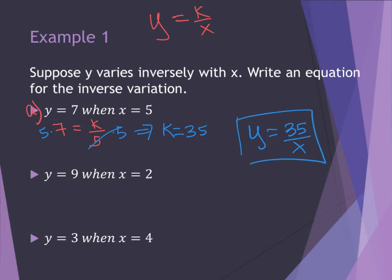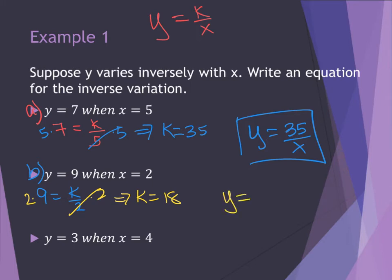For part B, I have 9 for my y value, equals k divided by 2. If I multiply both sides by 2, my 2's cancel, which gives me k equals 18, and I now have y equals 18 divided by x.